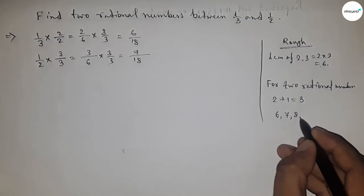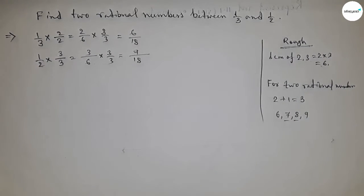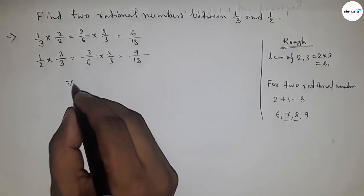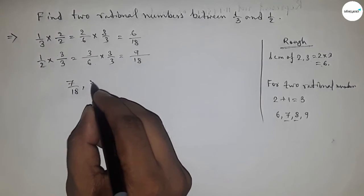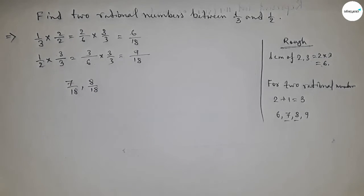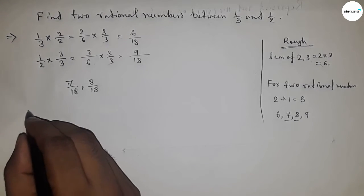9 by 18. So between 6, 7, 8, and 9, so we got two numbers. So by these numbers we can form a rational number: 7 by 18 and 8 by 18. These are the two rational numbers between